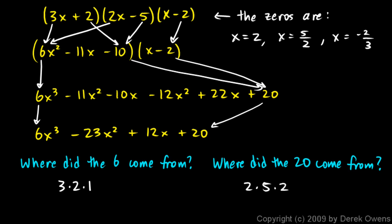Now, look again. Where did the 6 come from? These numbers right here, 3 and 2 and 1. Those are the denominators of these zeros. You see right here, this 3 and this 2 and this 1 right there. The denominators of the zeros gave us that 6 right there.